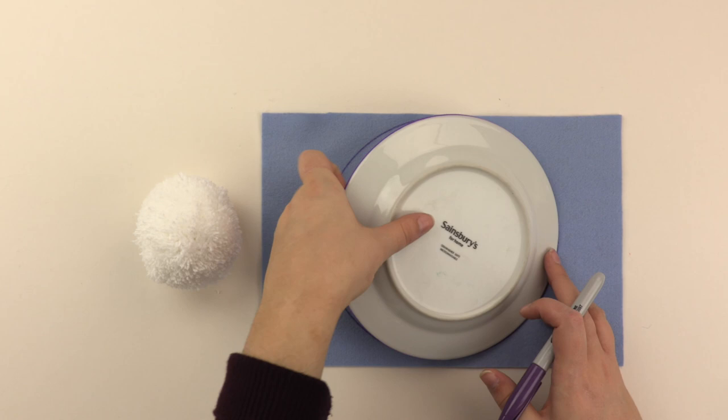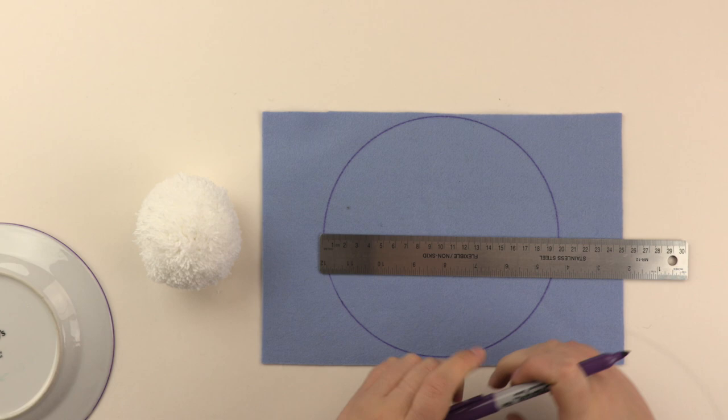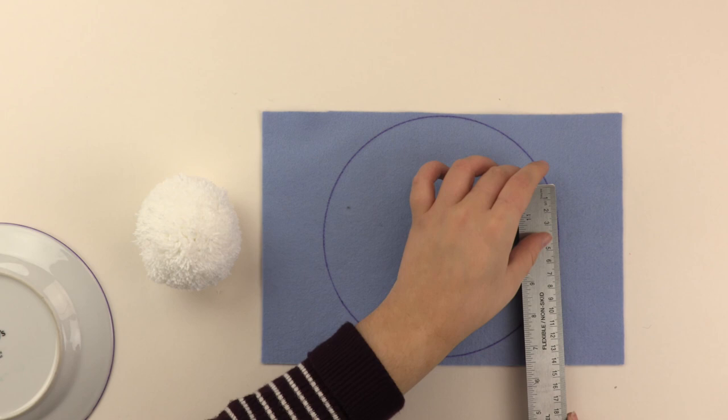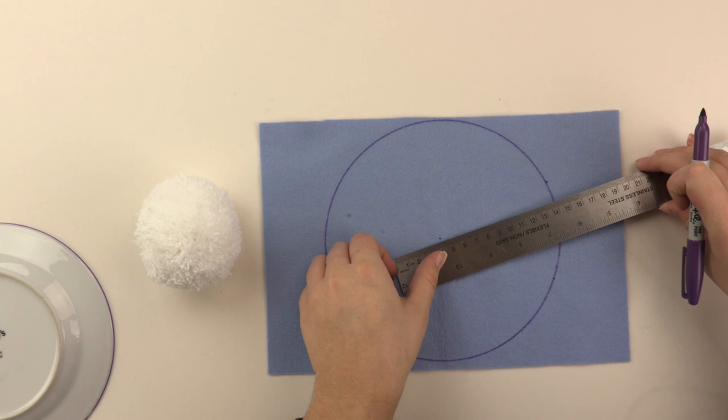Then just take away the plate and then with the ruler, you just want to pinpoint the center. And then on the side, you just want to measure around 8cm. So just put a point there and a point there and then draw up from the center.